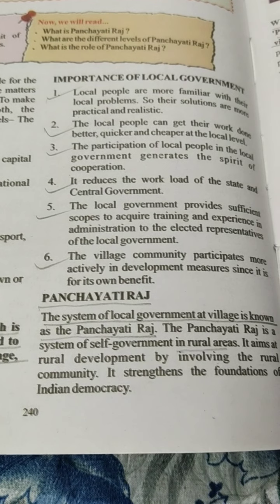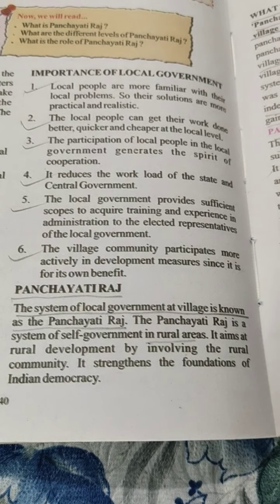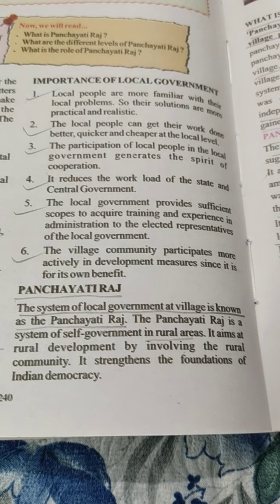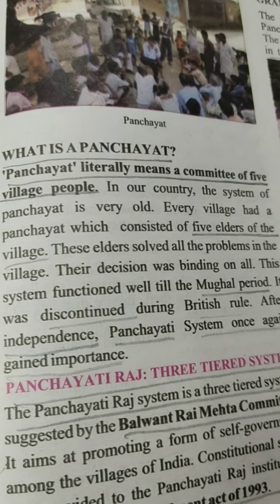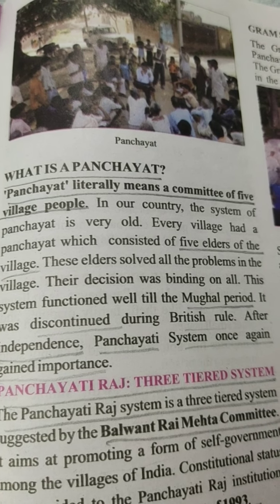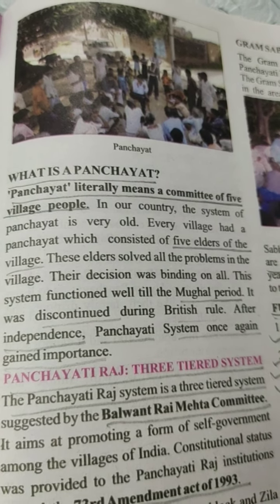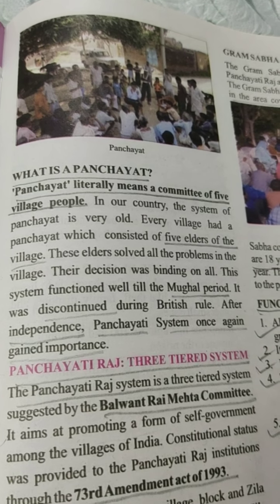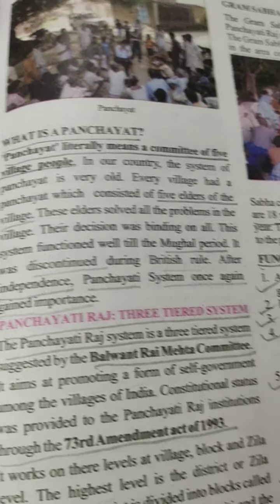Now we will see Panchayati Raj. What is Panchayati Raj? The system of local government at the village level is known as Panchayati Raj. The Panchayati Raj is a system of self-government in rural areas. It aims at rural development by involving the rural community. It strengthens the foundations of Indian democracy. Children, Panchayati literally means a committee of five village people. In our country, the system of Panchayati is very old. Every village had a Panchayat which consisted of five elders of the village. These elders solved all the problems in the village, and the decision was binding on all. This system functioned well till the Mughal period. It was discontinued during British rule. After independence, the Panchayati system once again gained importance.